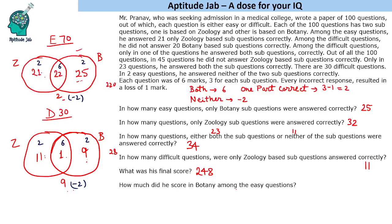How much did he score in botany among the easy questions? In botany among easy questions, he answered 47 correctly and 23 incorrectly. So 47 times 3 is 141, minus 23, gives 118. His score in botany among the easy questions is 118. That is the solution to the set — if you enjoyed solving it, please like the video.